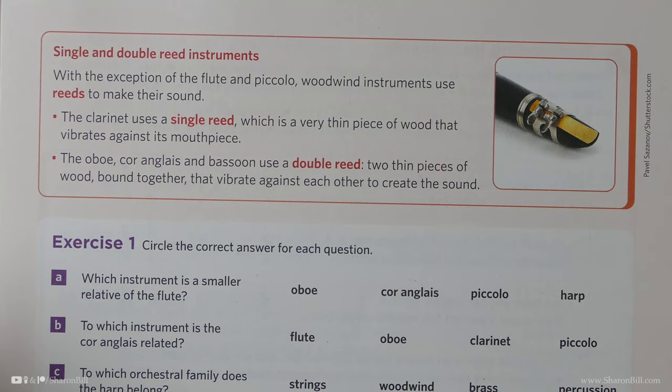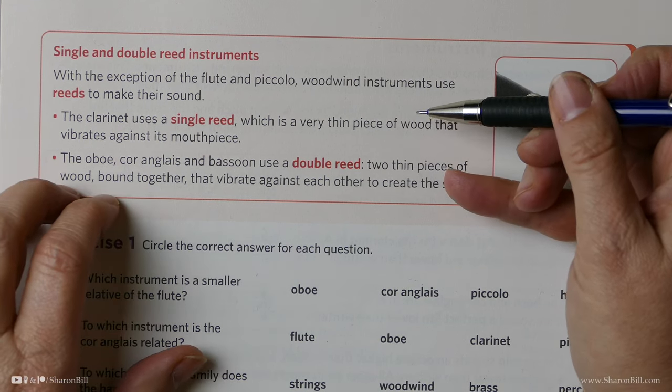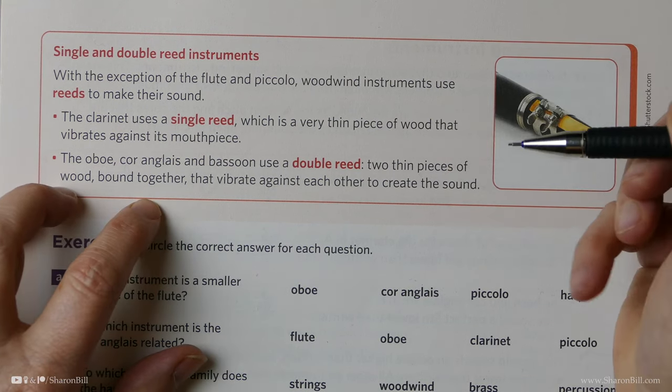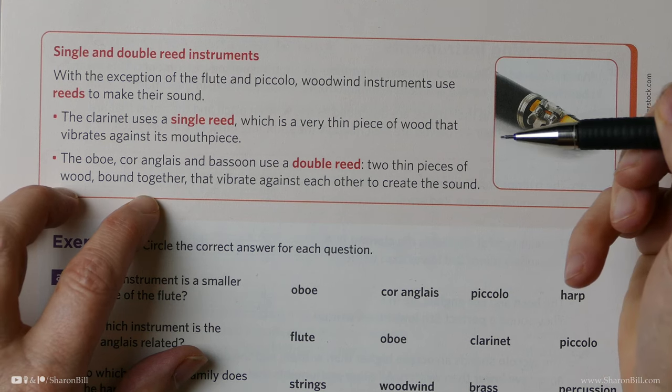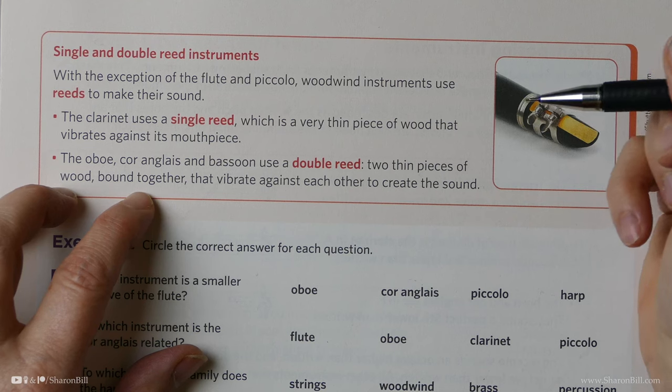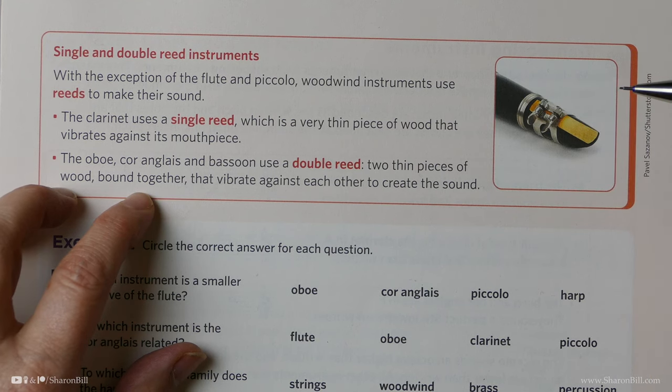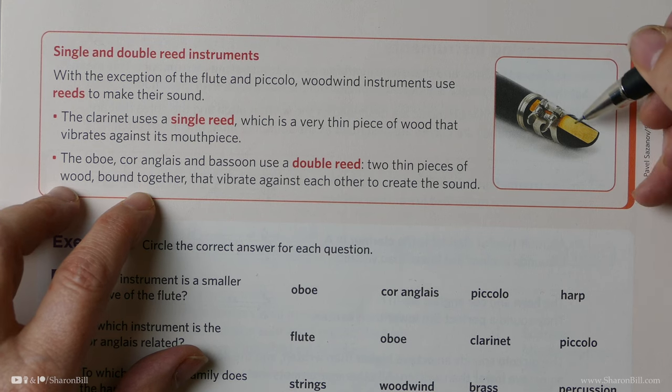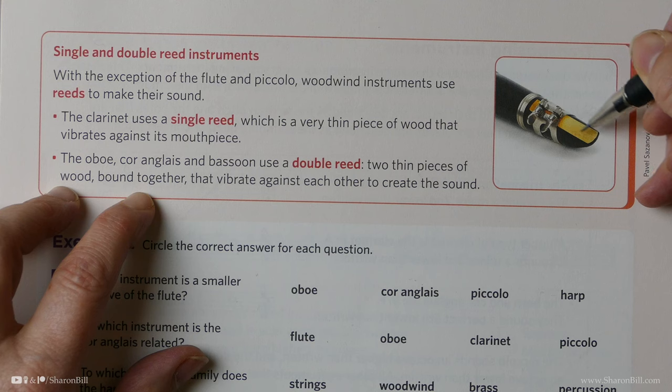We're continuing with the topic of instruments of the orchestra on page 63 of the Grade 5 Discovering Music Theory workbook. In this information box here, we get to look a little bit more closely at the instruments of the woodwind section. Some instruments don't have reeds, for example, the flute and the piccolo. Other instruments do have reeds, which is a fibrous, wooden slither.